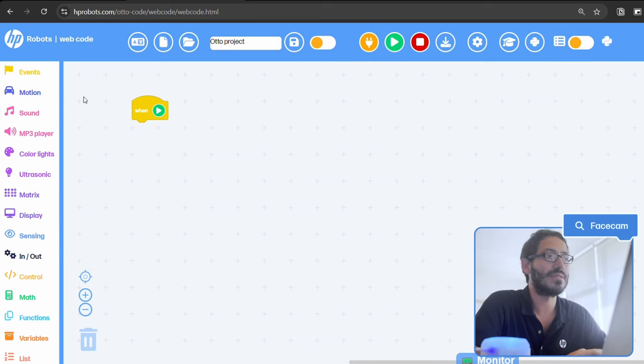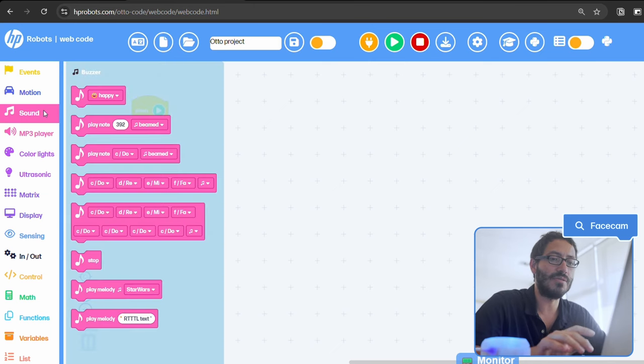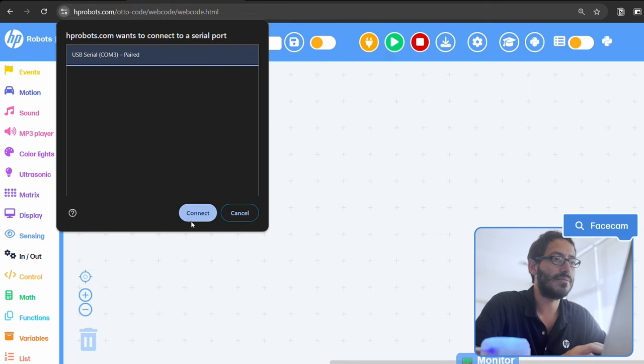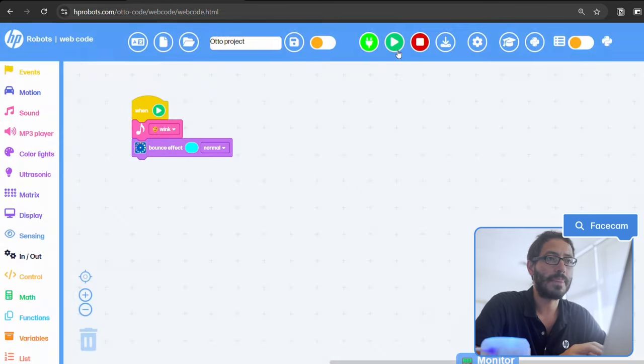Later on, our students can move into Warblocks. Warblocks is like the traditional Scratch. Similar and familiar colors that they have been using before to do the same functions, but now we have more functionalities. I can add effects to the lights. I can add different sounds, different tones. I can connect here again quickly via USB and run the code immediately.